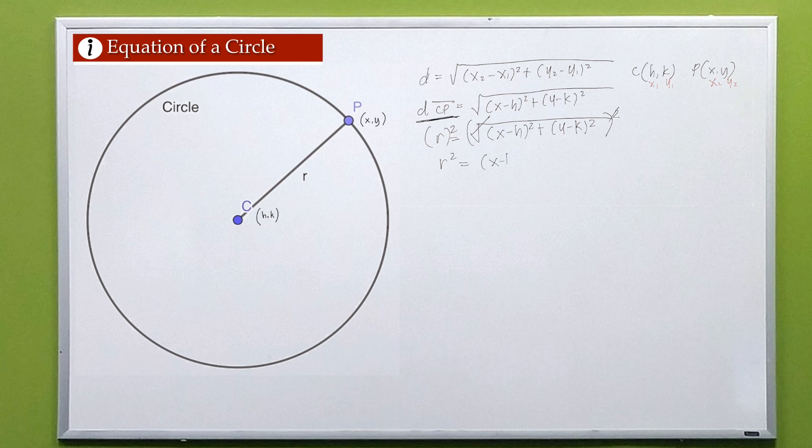Hence, the standard equation of the circle is r squared equals the quantity of x minus h squared plus the quantity of y minus k squared. Or, we can also say that the quantity of x minus h squared plus the quantity of y minus k squared equals r squared.